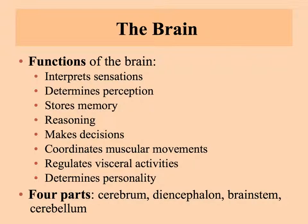Now let's look at the brain itself. The brain carries out analyzing and thinking, memory, reasoning, coordinating what your body is doing, taking care of all the automatic visceral activities of your organs, and determining your personality and how you react to the world. There are four parts of the brain: the cerebrum, the diencephalon, the brain stem, and the cerebellum.